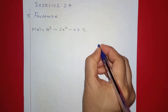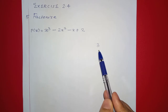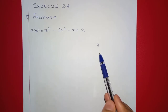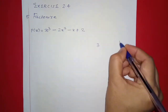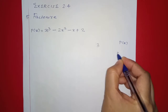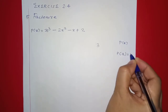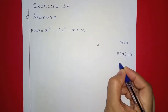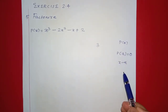We will get 3 solutions. If we have a polynomial P of x, at a certain value P of x equals 0, if P of a equals 0, then x minus a is a factor of P of x.